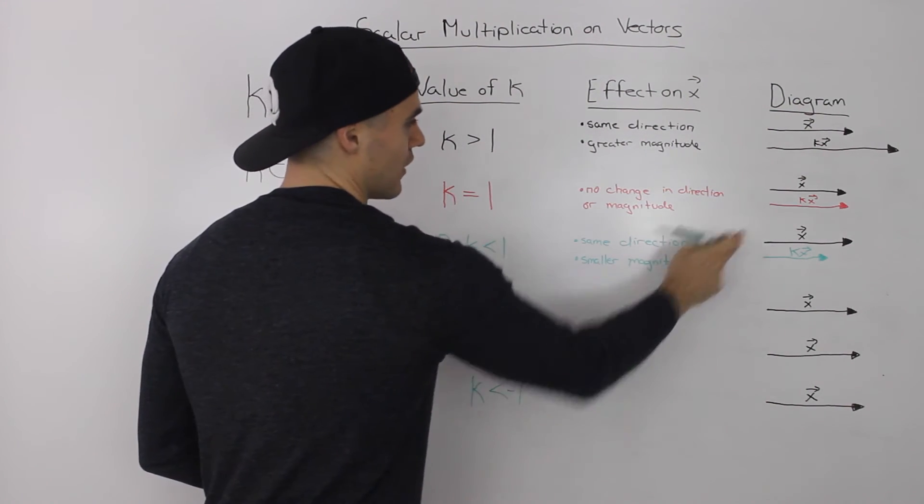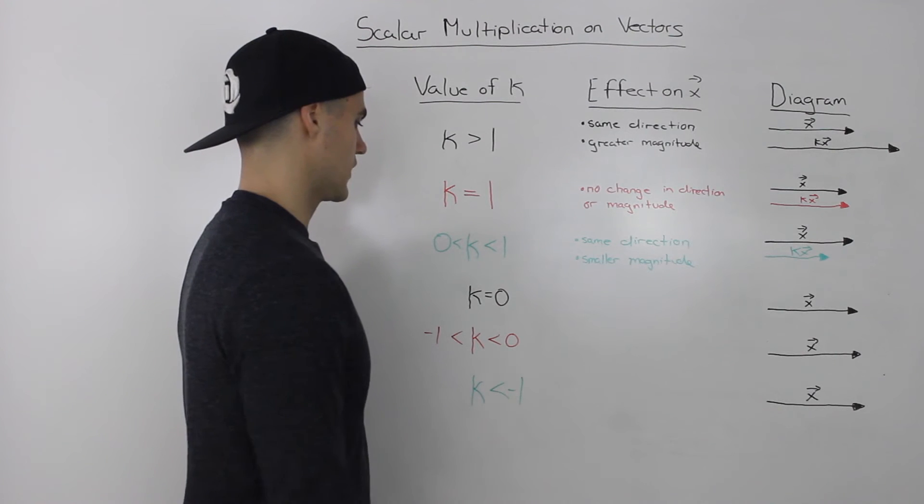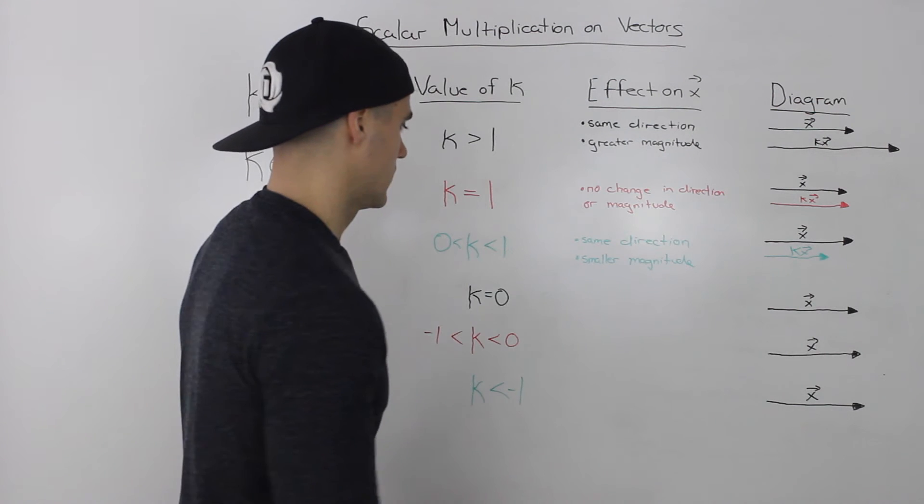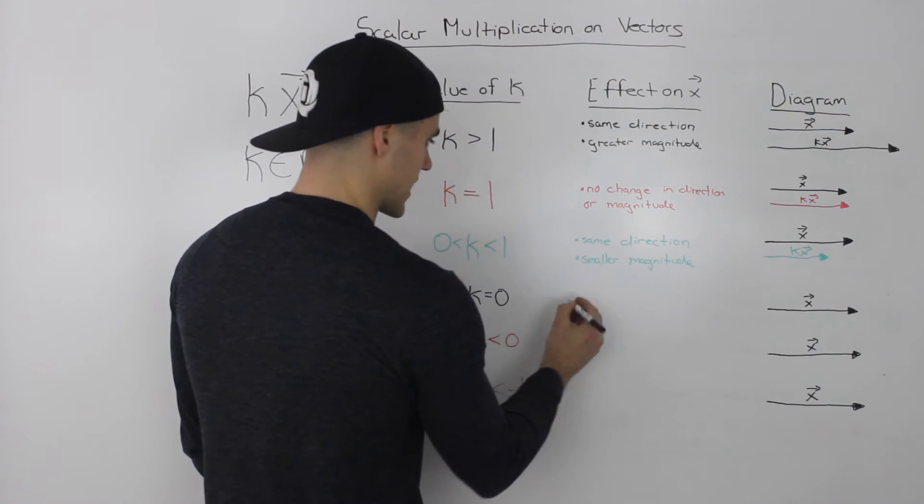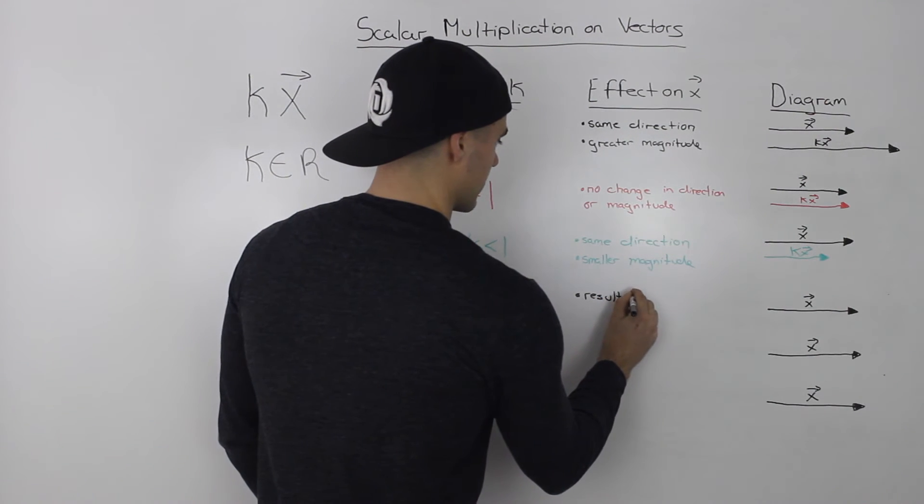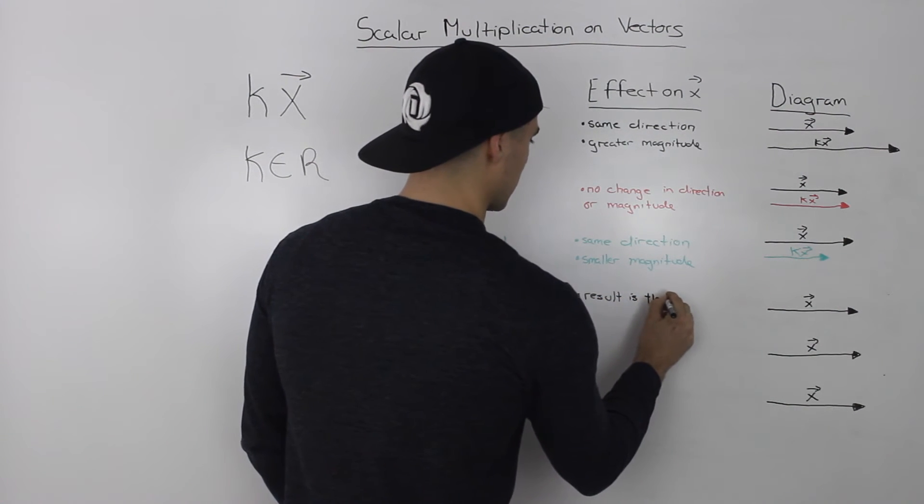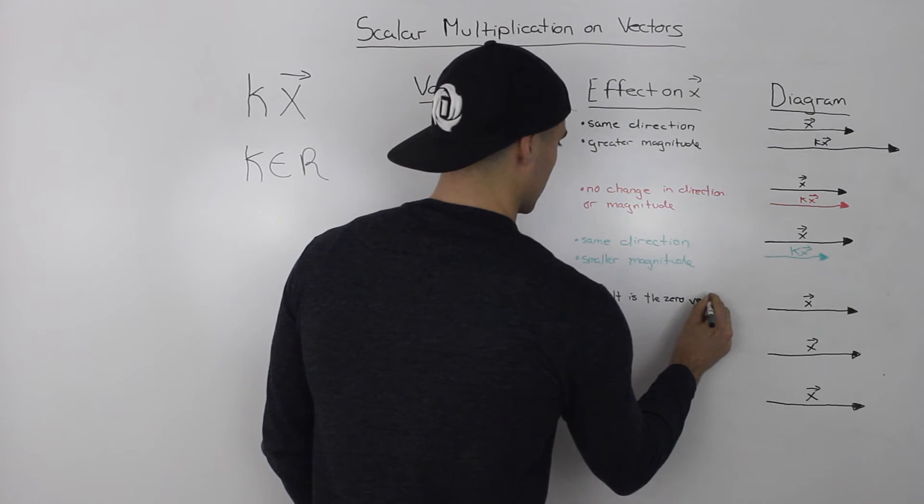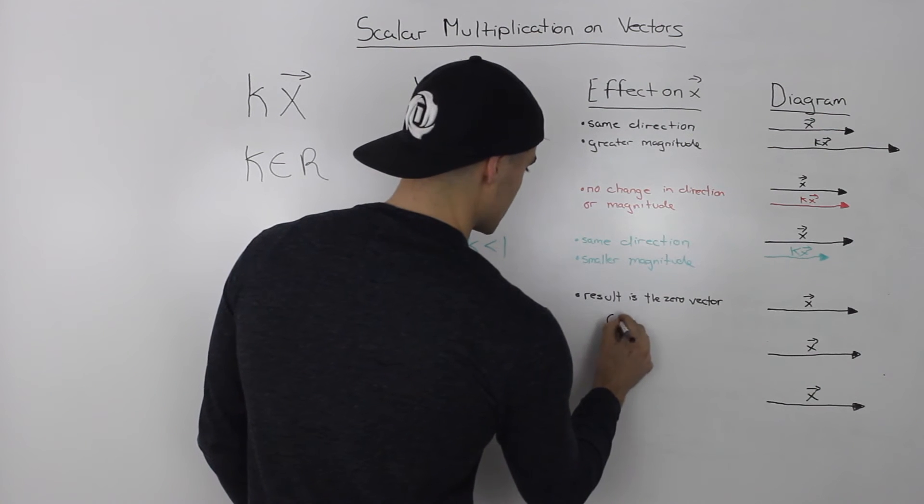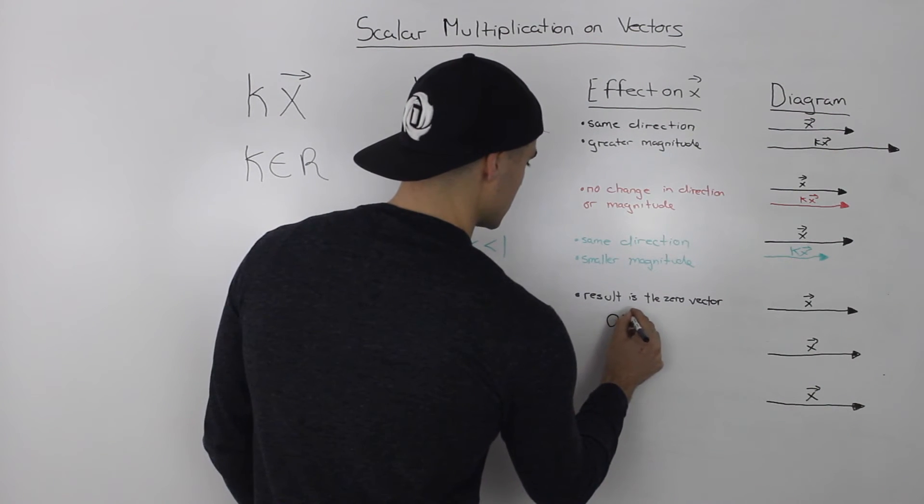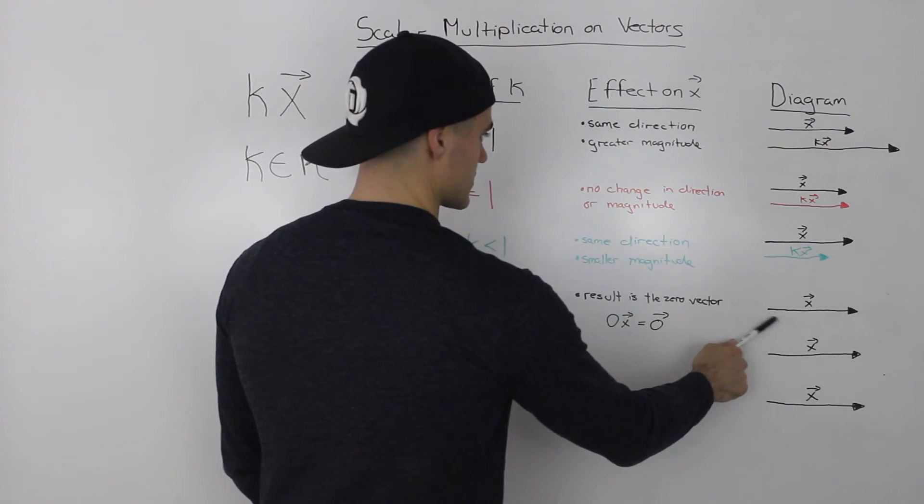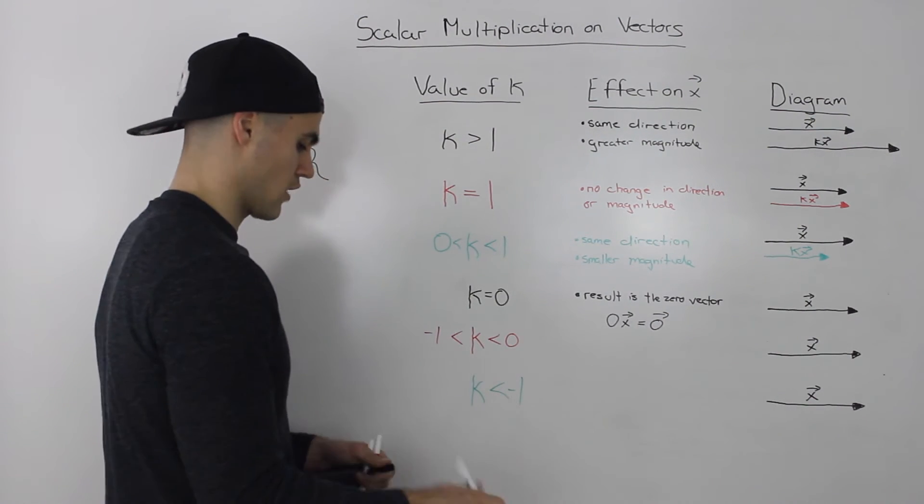Moving on to the next case, what happens when our scalar is zero? So when our scalar is zero, our result is the zero vector. We basically end up with nothing. So zero times a vector x would give us the zero vector. So there's nothing even to draw for that case.